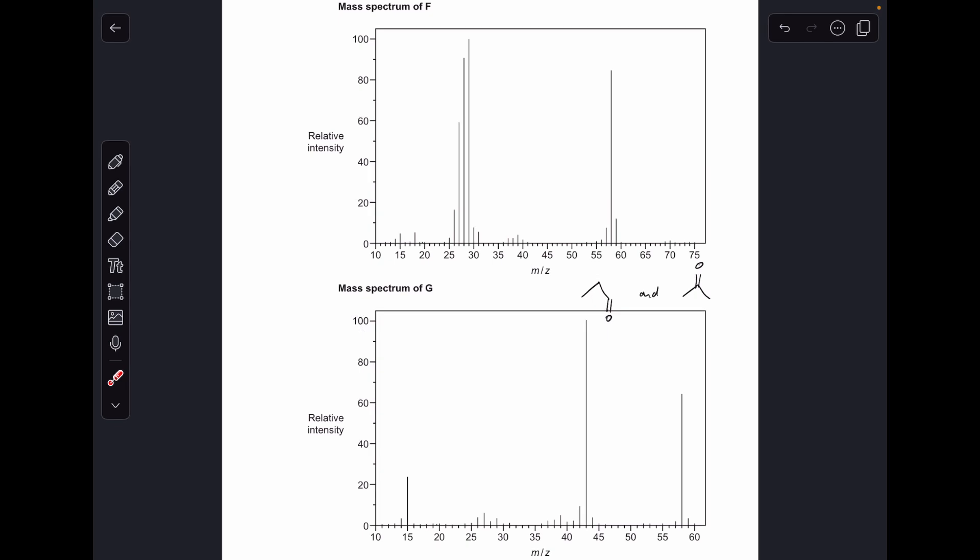So I've just zoomed out so we can see both mass spectra on the screen, so I hope you can see everything okay. Remember these are our options, so what we need to do is look for obvious differences in the fragmentation patterns of the mass spectra and then establish which compound can form a particular fragment and which one can't.